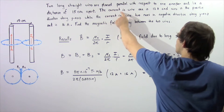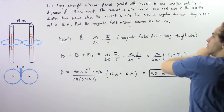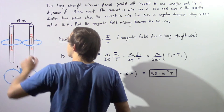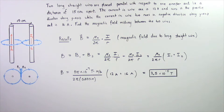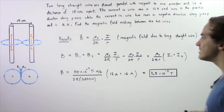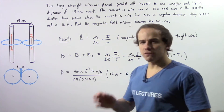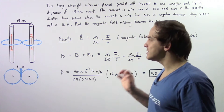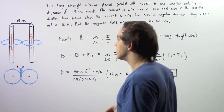The electric current in wire one is 12 amps and runs in the positive direction along the y-axis. At the same time, the current in wire number two runs in the negative direction along the y-axis and is given to be 16 amps. So 12 amps runs in the positive direction and 16 amps runs in the negative direction in the second wire.